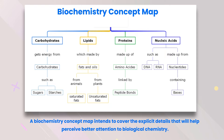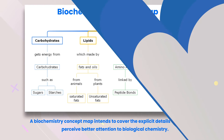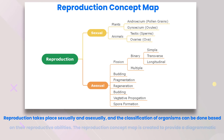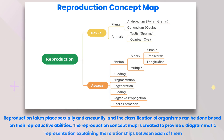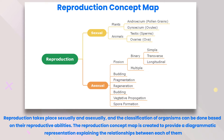Biochemistry concept map: a biochemistry concept map intends to cover the explicit details that will help perceive better attention to biological chemistry. Reproduction concept map: reproduction takes place sexually and asexually, and the classification of organisms can be done based on their reproductive abilities. The reproduction concept map provides a diagrammatic representation explaining the relationships between each of them.